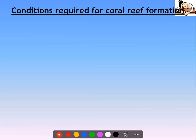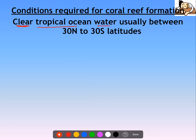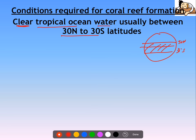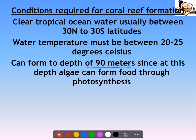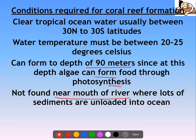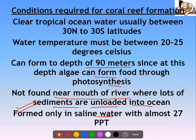Conditions required for coral formation: tropical ocean water between 30 degrees north to 30 degrees south latitudes. Water temperature must be between 20 to 25 degrees Celsius. They can form up to a depth of 90 meters, because that is the depth at which algae can carry out photosynthesis — zyada depths pe nahi milenge. They are not found near the mouth of rivers where a lot of sediments are unloaded into the ocean. And they are only found in saline water with salinity of almost 27 ppt.